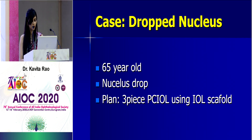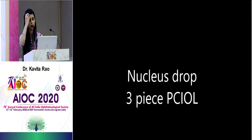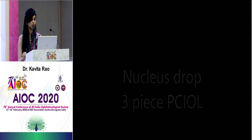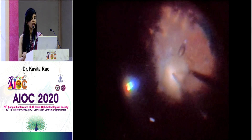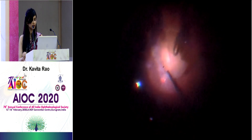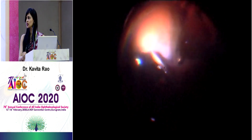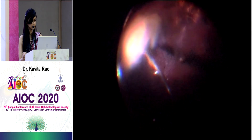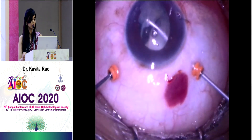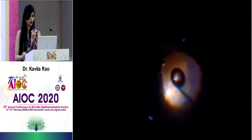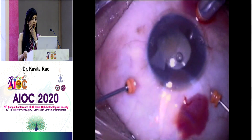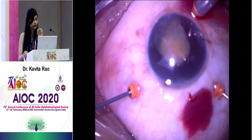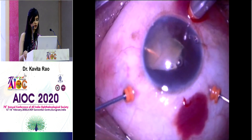This next case shows a nucleus drop that was quite hard. The surgeon delivered the nucleus into the anterior chamber and placed a three-piece IOL in the remaining fornices as a scaffold, and the remaining pieces were then removed from the anterior chamber using the IOL as scaffold. The surgeon was not confident doing phaco-fragmentation in the vitreous, so he delivered it anteriorly, and after clearing most pieces I put in the IOL as scaffold and ate up the remaining pieces with phaco.